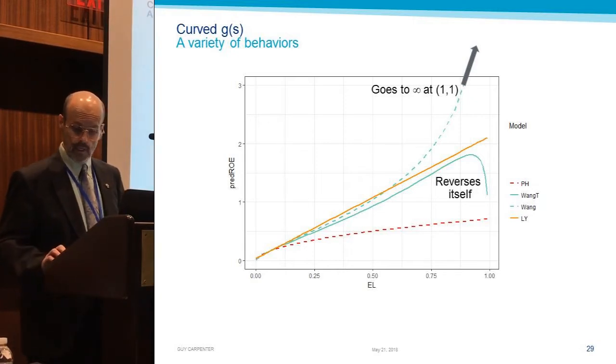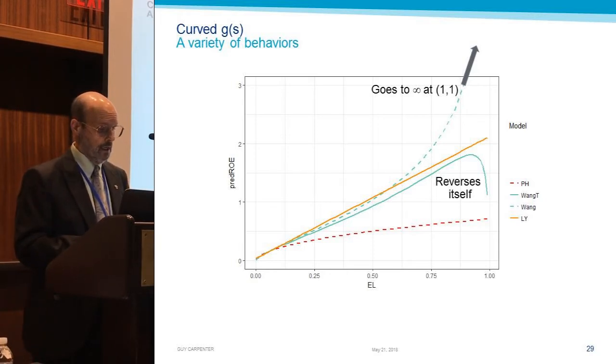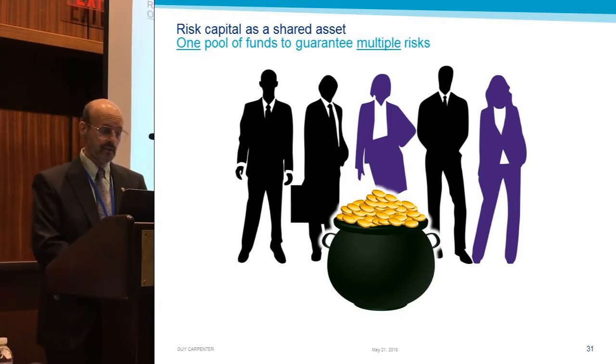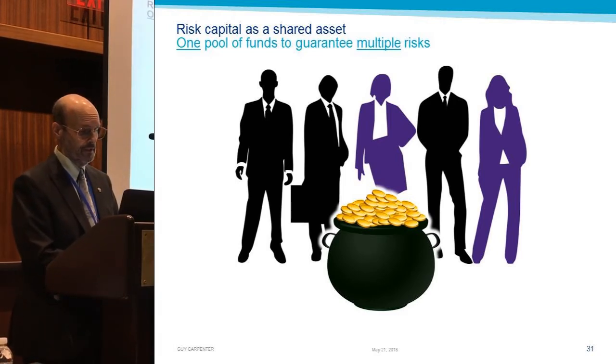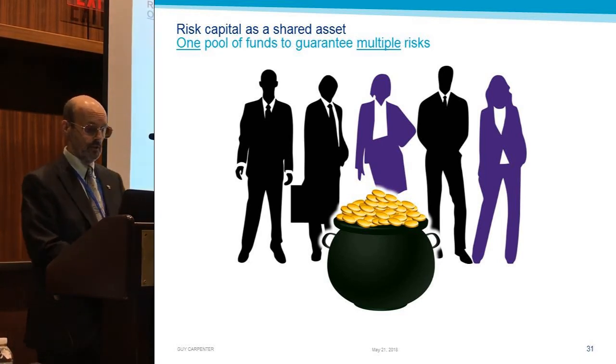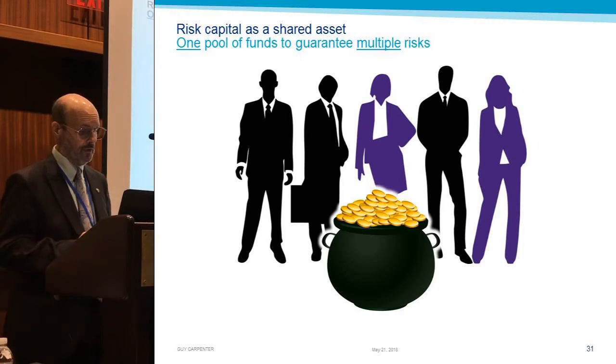I'm going to spend a few minutes now. No CAS talk is complete without a reference to Don Mango, so this is mine. I'm dipping into his Insurance Capital as a Shared Asset paper, which had a lot of interesting things to say, one of which is that capital is a shared asset, which is why you shouldn't be allocating capital, but that's another story.